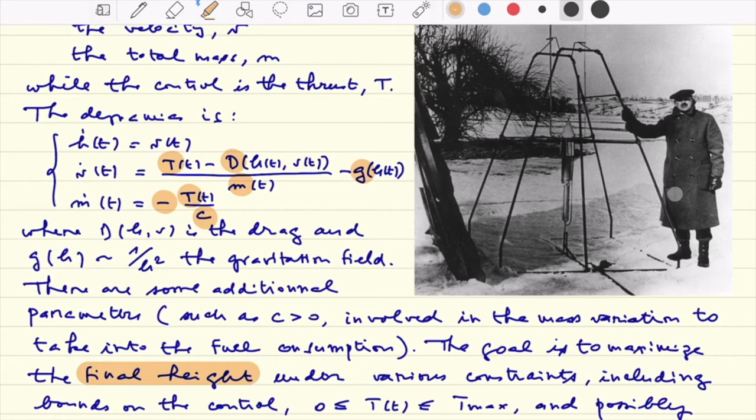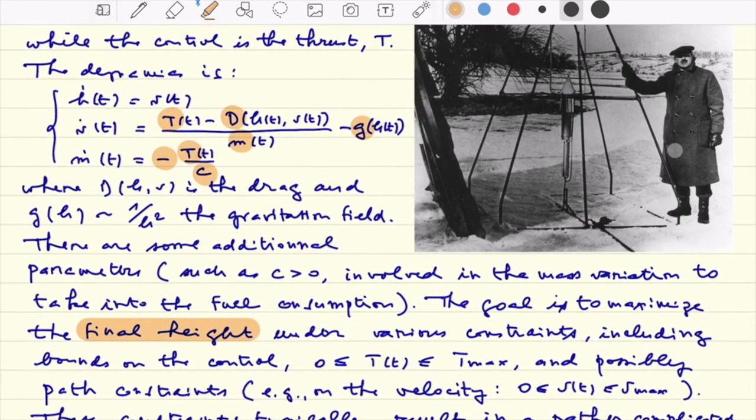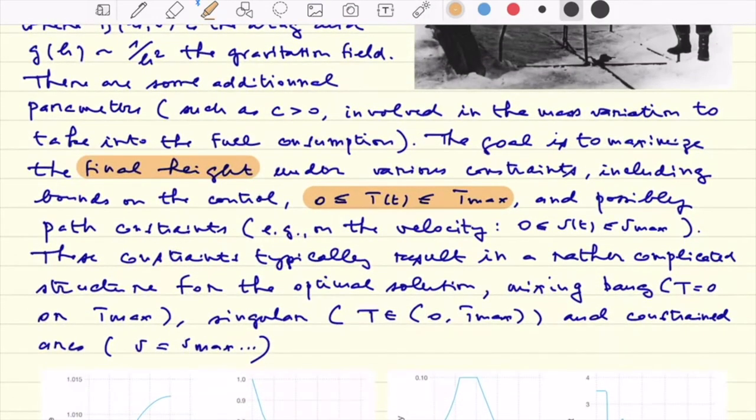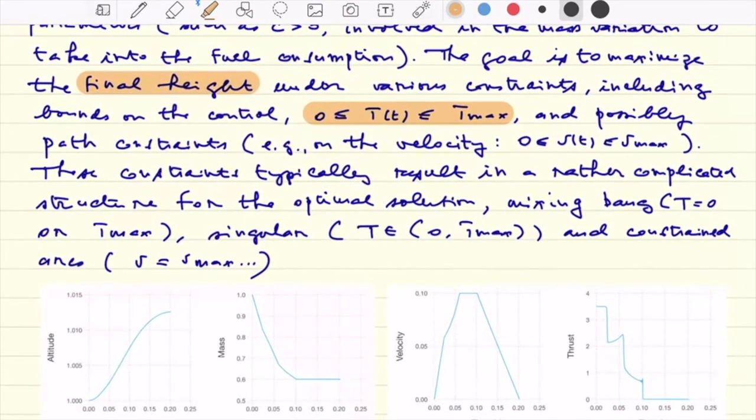We have some constraints, including bounds on the control, of course, so meaning that we have a bounded thrust at our disposal, clearly, and possibly some path constraints. We will try to test these kind of things from the numerical side. The typical one can be constrained on the drag or on the velocity. We will, for instance, try to see what happens when we have some bounds on the velocity.